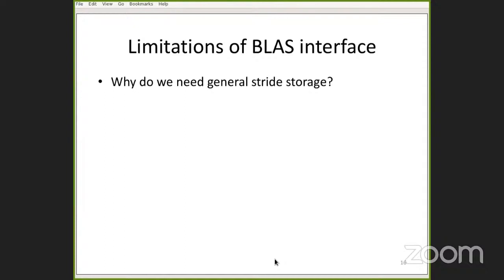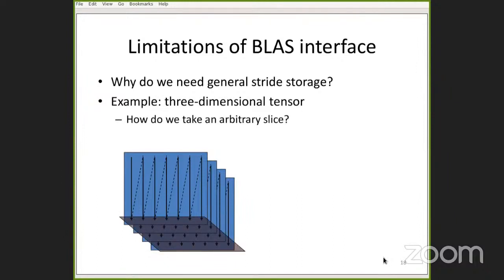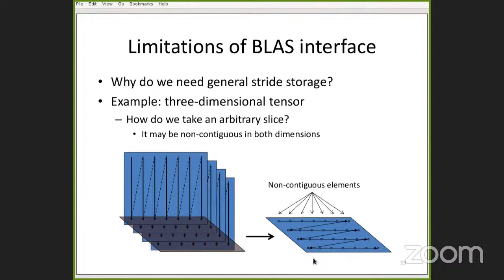Why do we even need general stride storage? It's certainly not the kind of storage you'd reach for on modern computers. But suppose you have a three-dimensional tensor — just a stack of column major matrices. If you want to take an arbitrary slice in a non-contiguous plane, all of those elements are non-contiguous. In the BLAS, you can't refer to such a matrix directly. You would have to make a temporary copy in column major format, proceed with your computation, and then update the original matrix afterward.